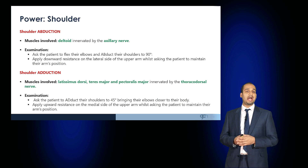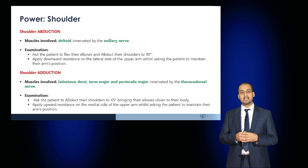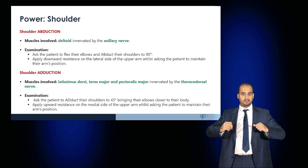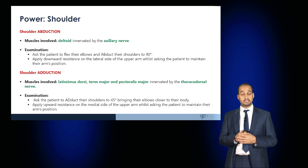Start by examining shoulder abduction. The muscle involved is the deltoid, innervated by the axillary nerve. Ask the patient to flex their elbows and abduct them to 90 degrees, then apply downward resistance on the lateral side of the upper arm. Next, check shoulder adduction, involving the latissimus dorsi, teres major, and pectoralis major, innervated by the thoracodorsal nerves. Ask the patient to adduct their shoulders to 45 degrees and bring their elbows closer to their body, applying upward resistance on the medial side of the upper arm.